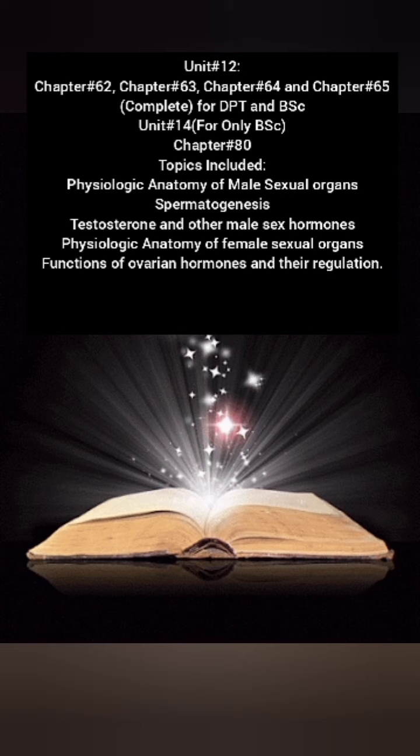Unit number fourteen is only for BSc Honours students. Chapters included are chapter number 81 and chapter number 82. From chapter number 80, topics included are physiologic anatomy of male sexual organs, spermatogenesis, testosterone, and other male sex hormones. From chapter number 81, topics included are physiological anatomy of female sexual organs and functions of ovarian hormones and their regulation. These chapters can be studied from Major Guyton as well as Ross and Wilson, but Major Guyton is preferred.